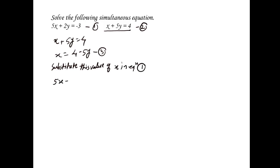Now solve the following simultaneous equations using the substitution method. We number them equation 1 and equation 2. We evaluate the coefficient and solve for x. The value of x is 4 minus 5y, which is equation 3.